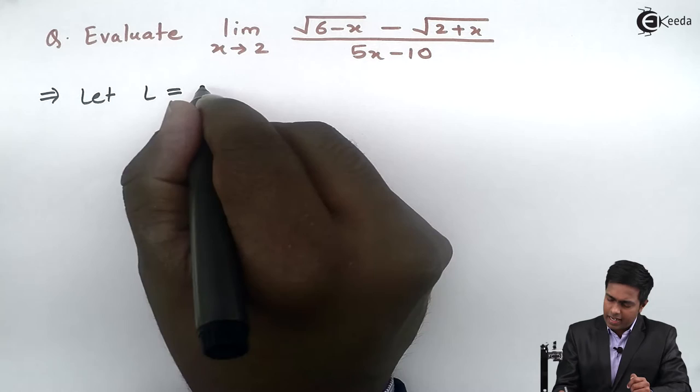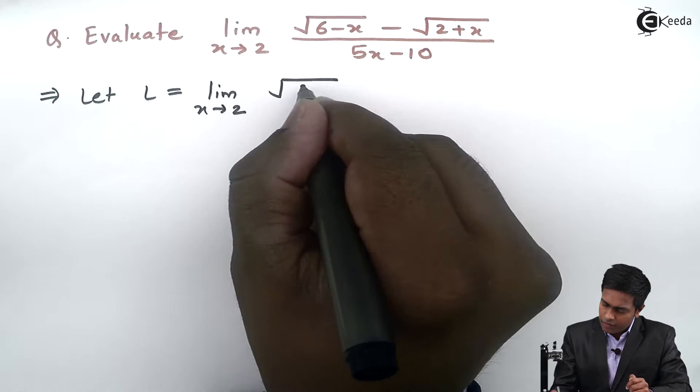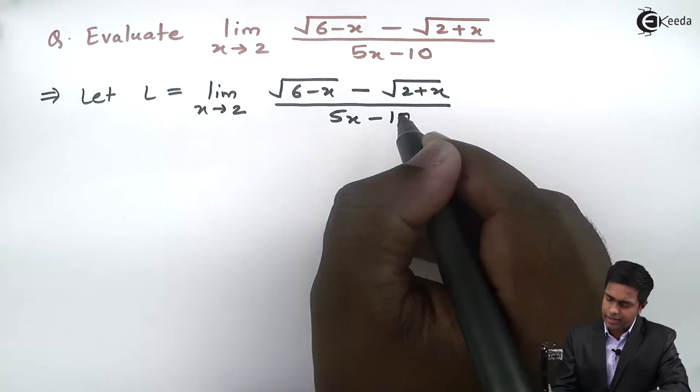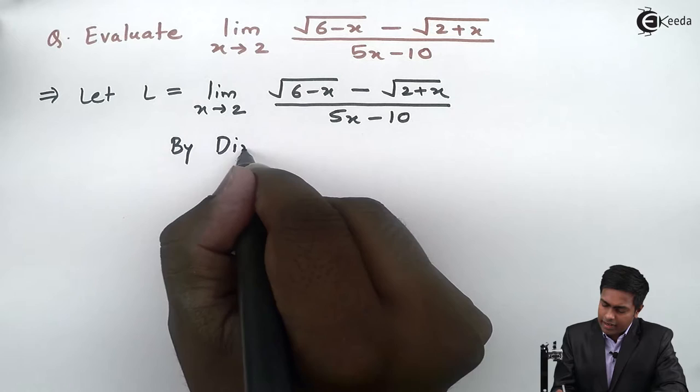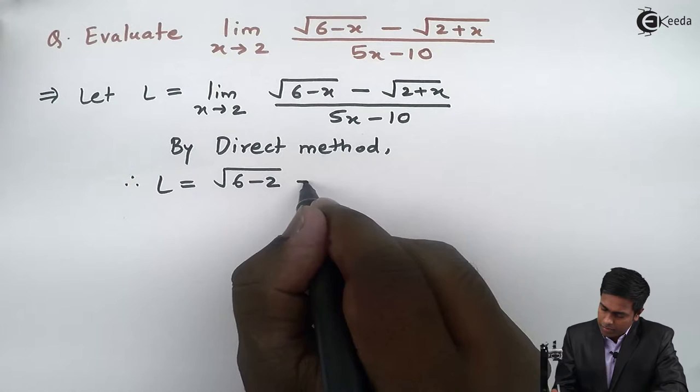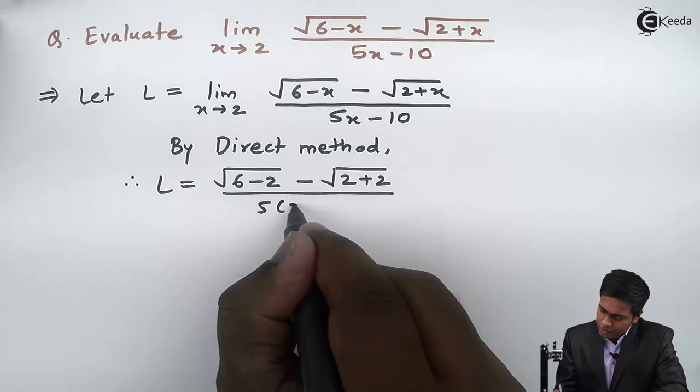First of all I will start with the direct method. I am considering this given limit as L, which is x tends to 2 of √(6-x) minus √(2+x), whole upon 5x minus 10. By direct method, we will get L as √(6-2) minus √(2+2), whole upon 5 into 2 minus 10.